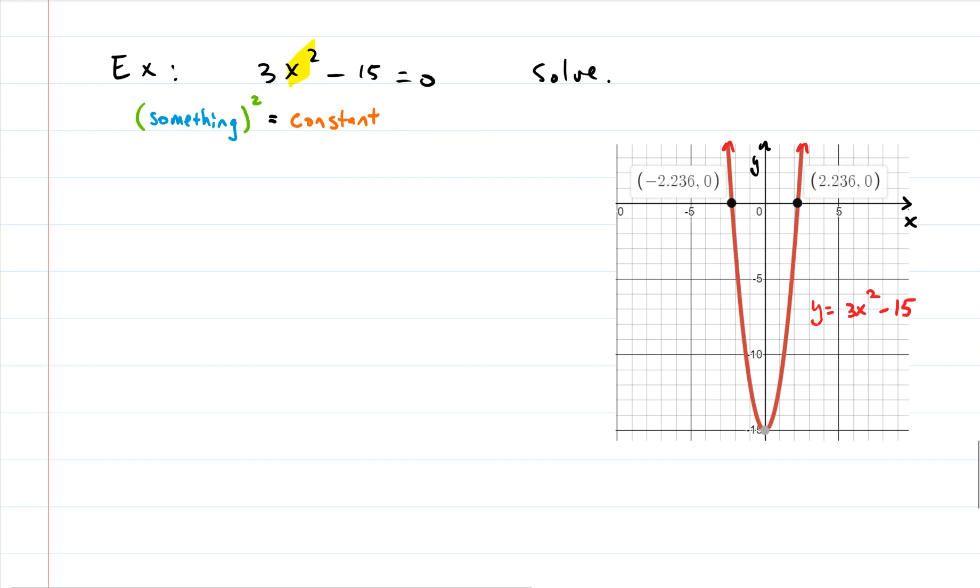I see something squared, there's the x squared right there, and I see a constant. So let's take that constant to the other side, let's take this negative 15 to the other side so it fits our form.